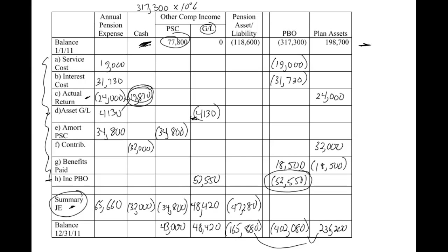So once again, pretty complete worksheet here. Oh, there's one more item that we need to add in — and that's the amortization of a gain or loss. We'll talk about that in the next video. The next video, I believe, is our last video for this lesson. So let's work through that next and then we'll really have seen everything that can possibly appear on these pension worksheets. Hope you're enjoying it — tune in next time for our last pension video. Take care, I'll see you next time.